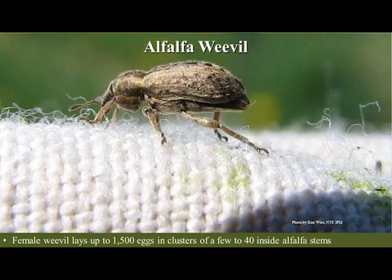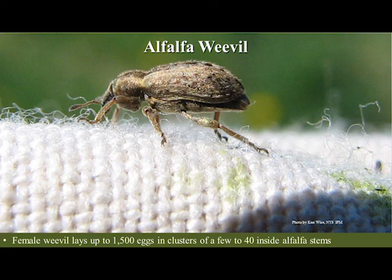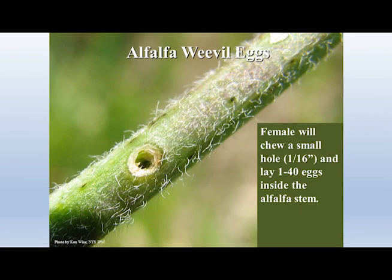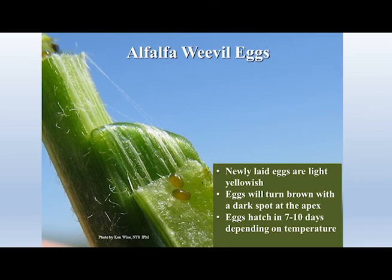Female alfalfa weevils can lay up to 1,500 eggs in clusters of a few to 40 inside a stem. The female chews a small hole about one-sixteenth of an inch and lays eggs inside the stem. The eggs are initially a light yellowish color, then turn brown with a dark spot at the apex. Depending on temperature, they hatch in seven to ten days.